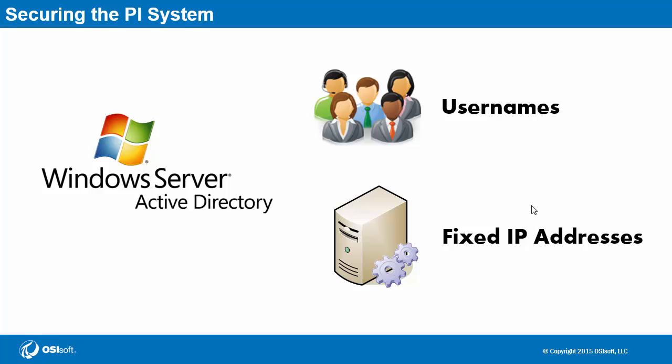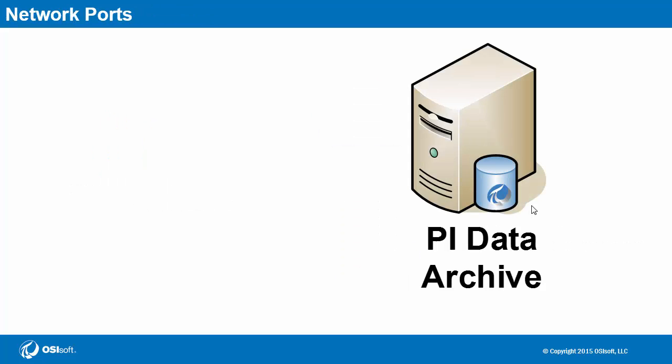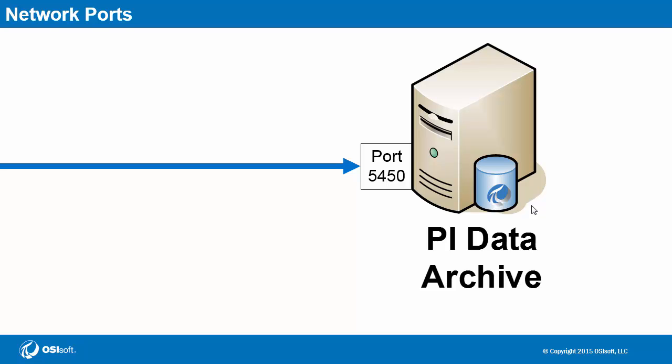One last note about security and network ports: for traffic flowing to the PI Data Archive, the single most common port you'll deal with is port 5450. This is the port that must be open on the PI Data Archive for any type of incoming traffic, whether it's PI Interfaces sending real-time data or users sending a request for data. For a complete list of ports for the PI System, please head over to KB01162 on our tech support site.